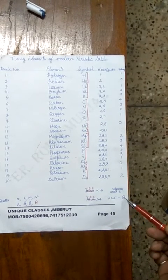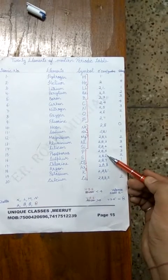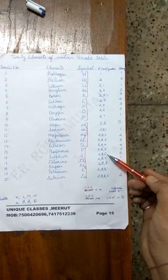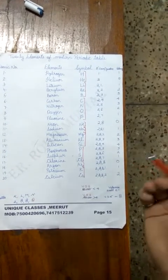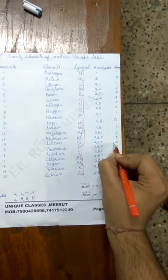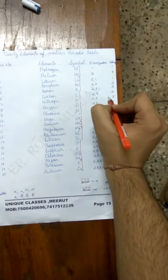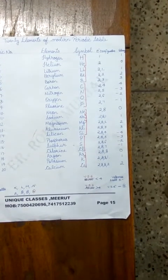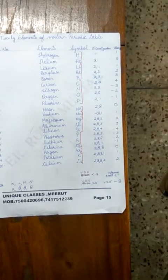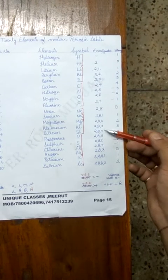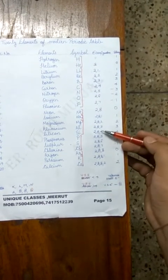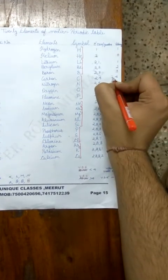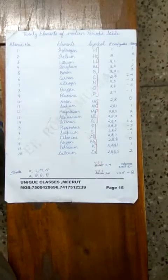If the valence shell electrons are more than 4, for example 6, then the valency is 8 minus 6, which equals 2, so the valency is 2 (or −2). If the valence shell electron count equals 4, then the valency is both +4 and −4. So valency can be ±4 in that case.